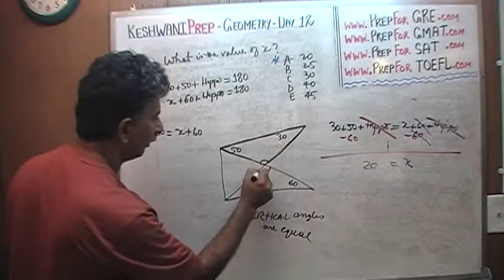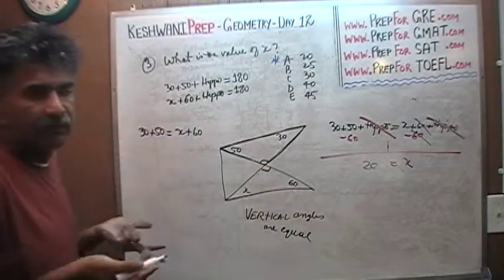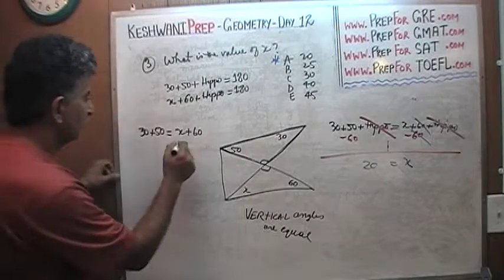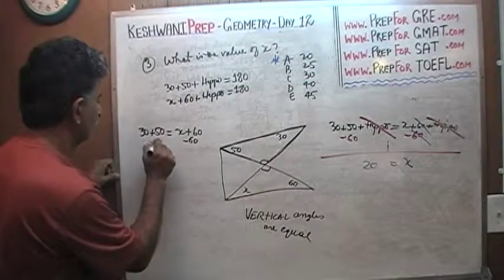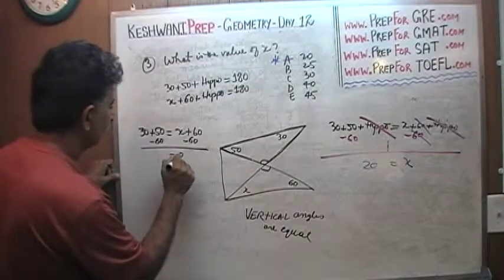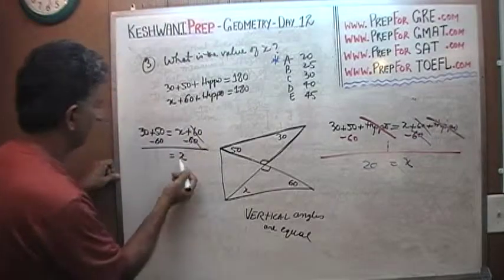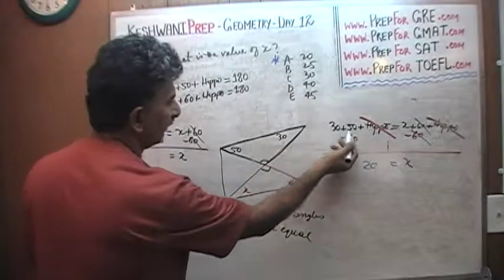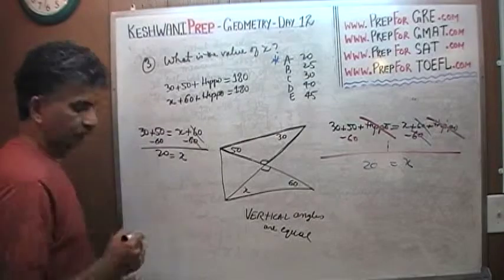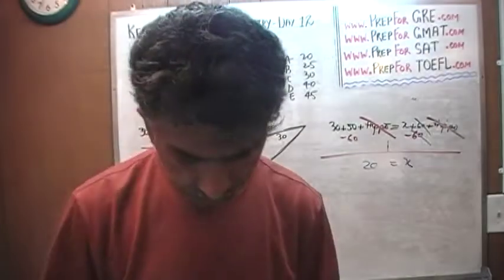Because this angle plays no role. It appears in both sides. It's going to disappear. And all you have to do is subtract 60 from both sides to get your x. And therefore x equals, this 60 drops out, and x equals just like before, 30 plus 50 minus 60 which is 20. Very good. That's all.